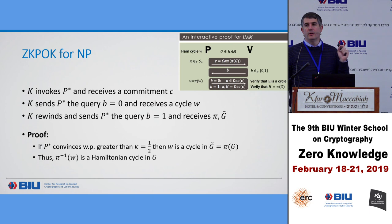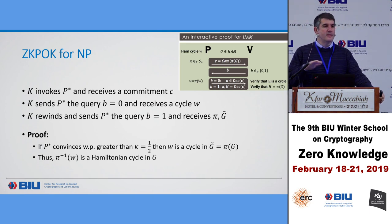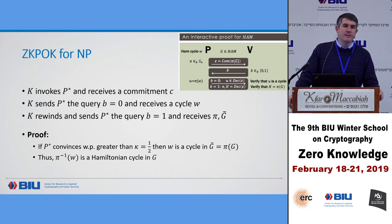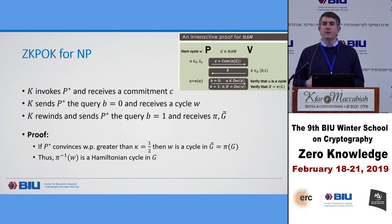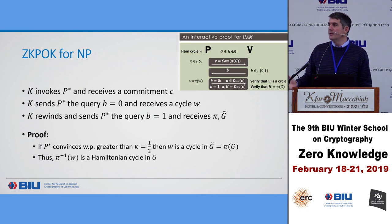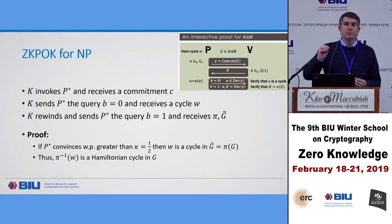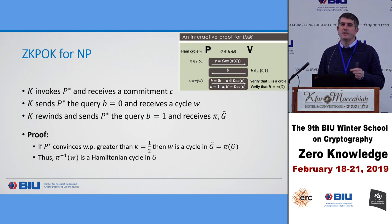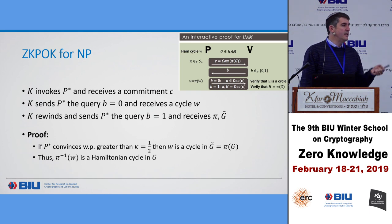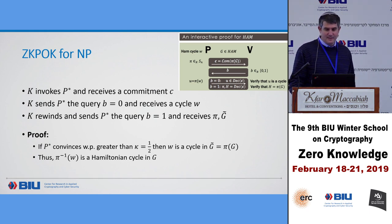If the prover convinces with probability greater than one-half, then W is a cycle in the permuted graph, and the inverse is a cycle in G. These are relatively easy examples because they work on a single bit of query with a simple probabilistic analysis. But proving that something is a proof of knowledge can be between tricky and extremely annoying — much more difficult than proving soundness — especially for constant-round protocols where you have arbitrary probabilities and must extract with the right probability. Sigma protocols, when Benny talks about them, have a nice property enabling easy extraction.